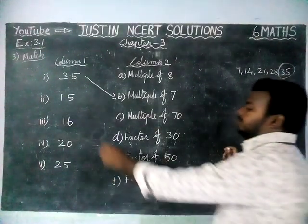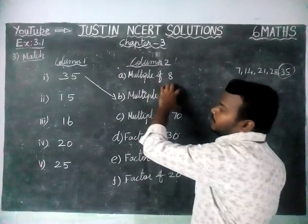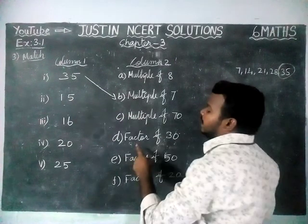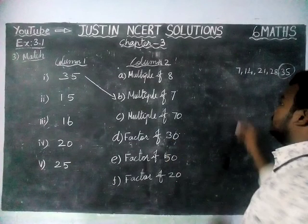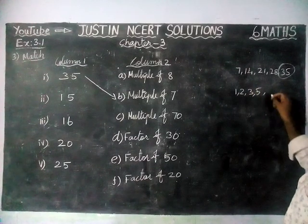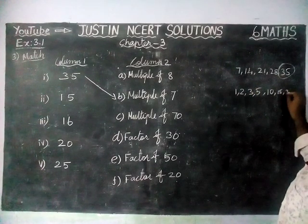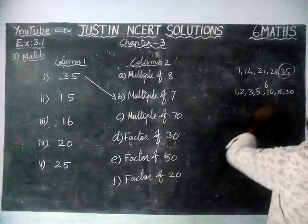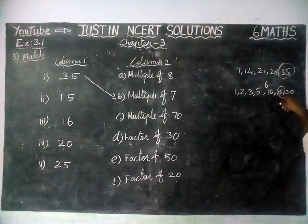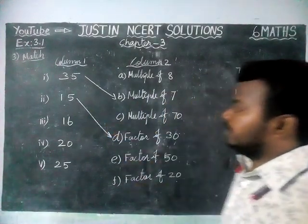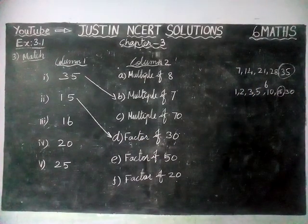Next, number 15. Multiple of 8 is not possible. Multiple of 70 is also not possible. Factor of 30 — what are the factors of 30? The factors of 30 are 1, 2, 3, 5, 6, 10, 15 and 30. So 15 is coming here. Therefore, for the second question, option D is the correct answer — factor of 30 is 15.